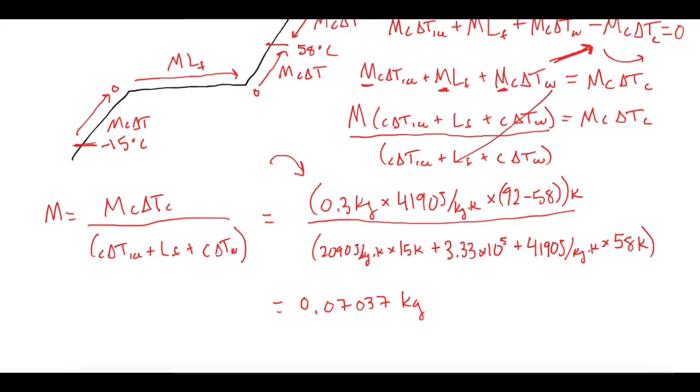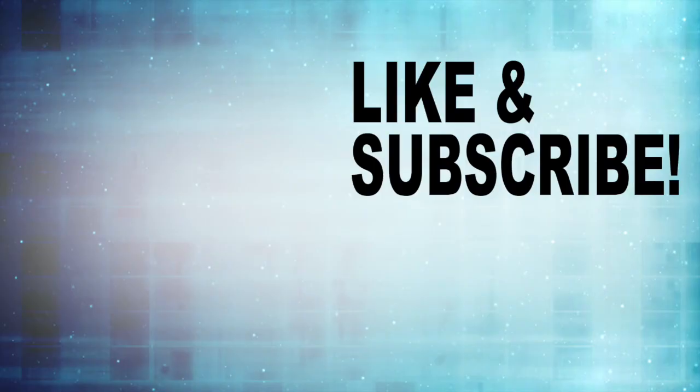But we want grams, so let's move the decimal place over 3. So we have as our final mass, our final answer, the mass of the ice cube that we want is 70.3... I think I wrote this wrong, I think I forgot a 6. 3, 6, 7 grams. Round it is 71 grams for our ice cube. This one is 71 grams.